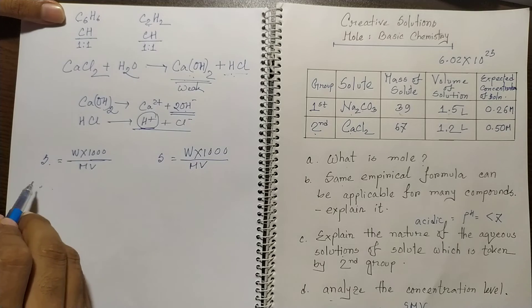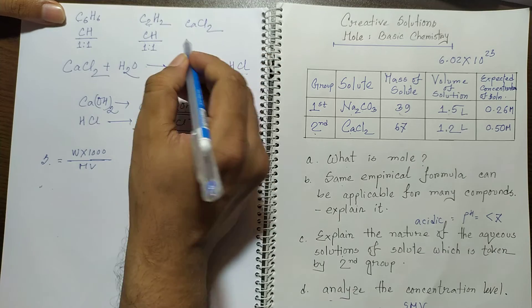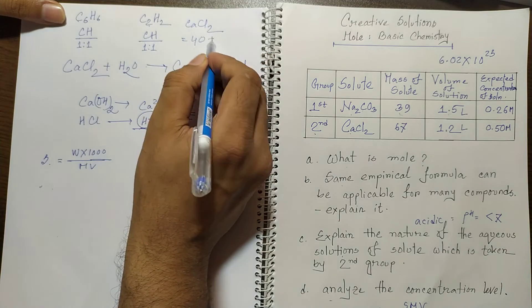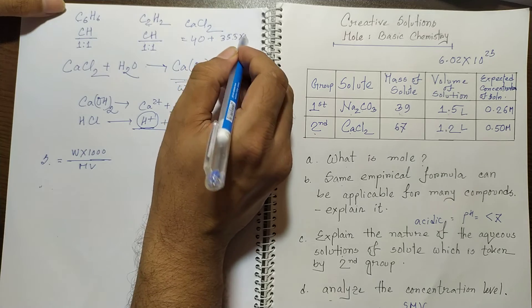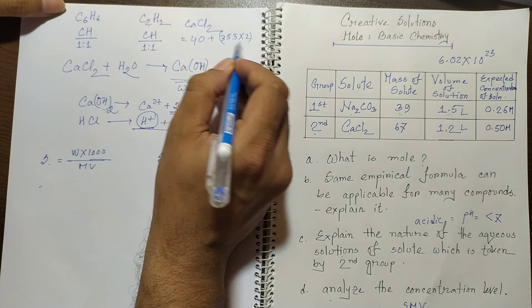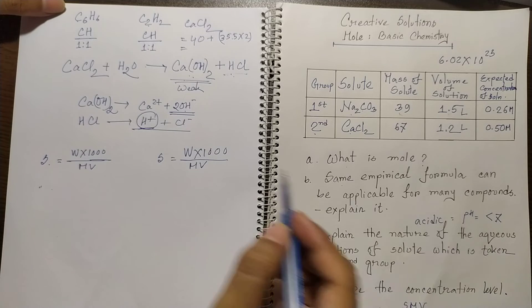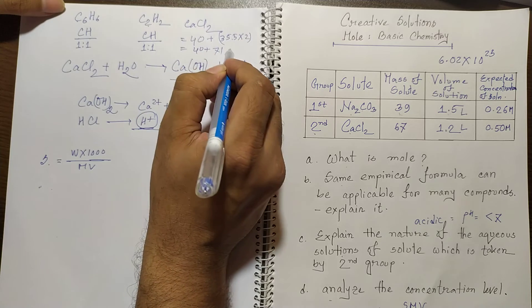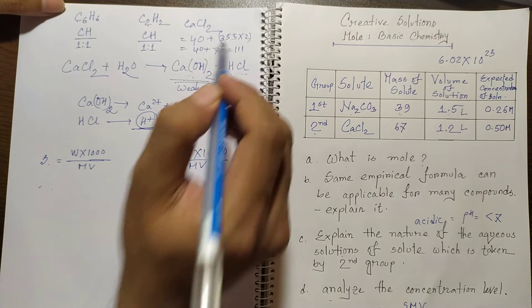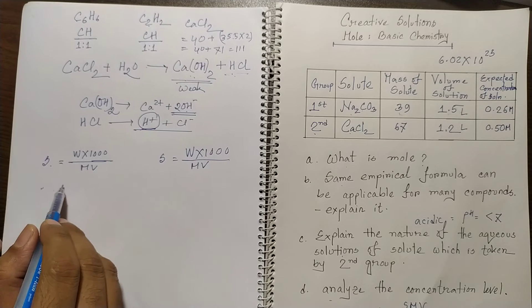For calcium chloride, the molecular mass is calculated as: calcium is 40, chlorine is 35.5 × 2 = 71, so total molecular mass = 40 + 71 = 111.